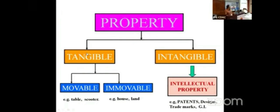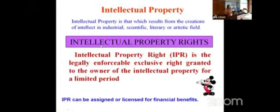Intellectual property is that which results from the creations of one's intellect — what comes out of your brain. That is called intellectual property. Intellectual property rights (IPR) are the rights created on such intellectual property to make them legally valid. IPR is a legally enforceable exclusive right.